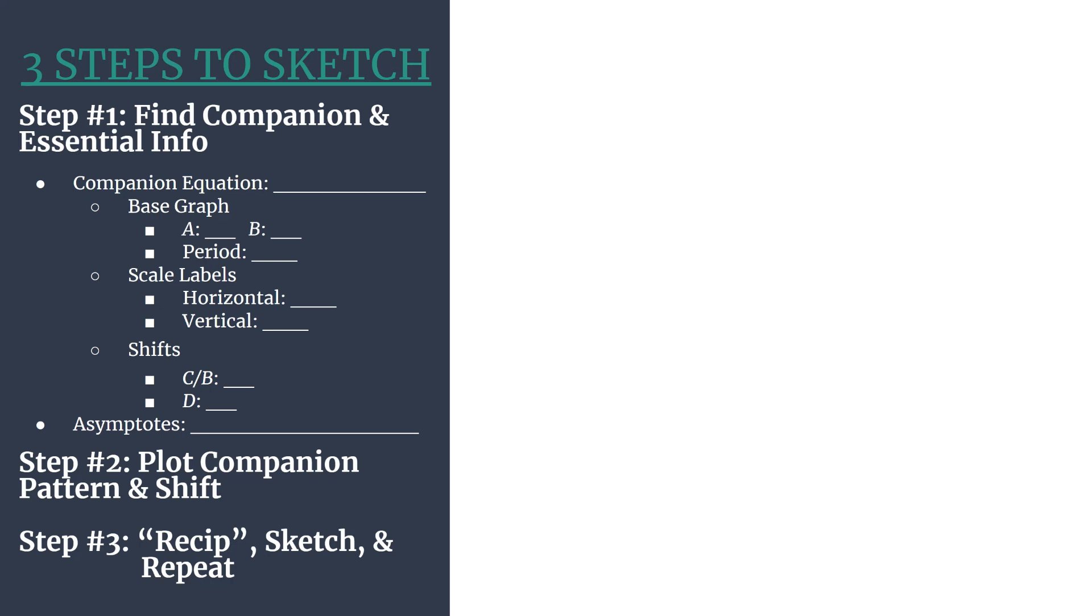So let's go ahead with our method. Here's our template. A quick overview. Step one, we'll find our companion equation and all the essential information for that. The companion equation to a secant graph is going to be a cosine graph, because they're reciprocals. We'll also find the asymptotes that we should expect for our final secant graph. Then we'll move into step two, where we plot our companion cosine pattern and take care of the shift. We'll do this lightly or in a different color, because that's not our final graph. That's what happens in step three, where we create our reciprocal graph with just a quick changeover of some key points. We'll sketch in our secant graph and then repeat.